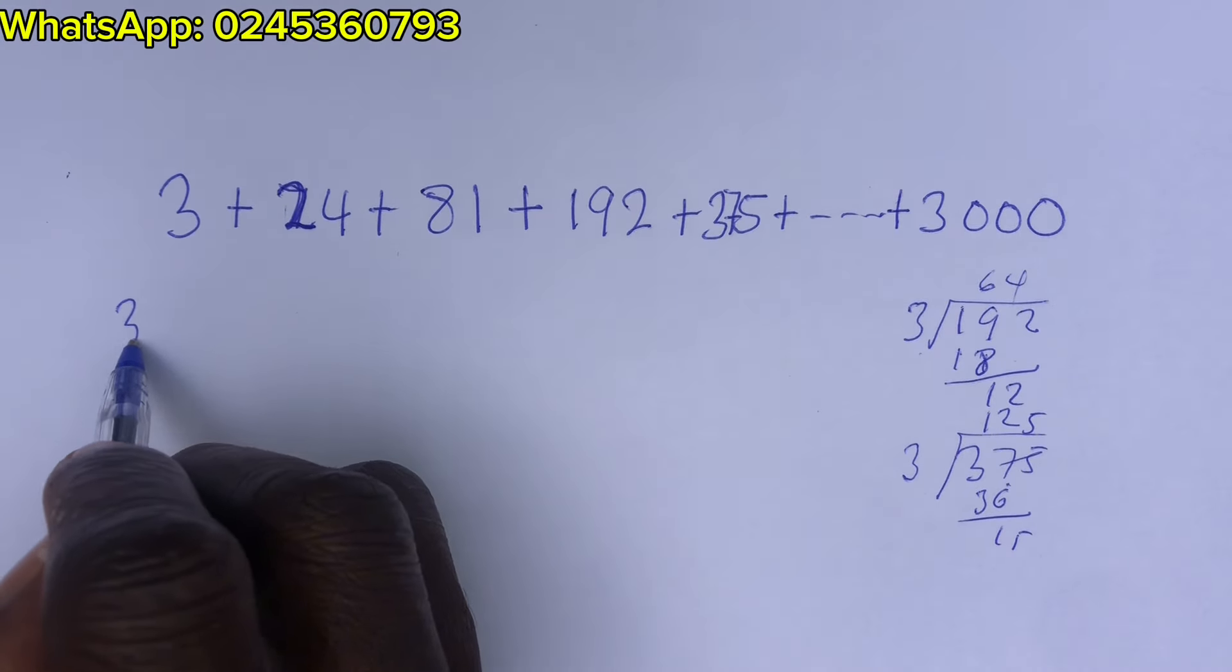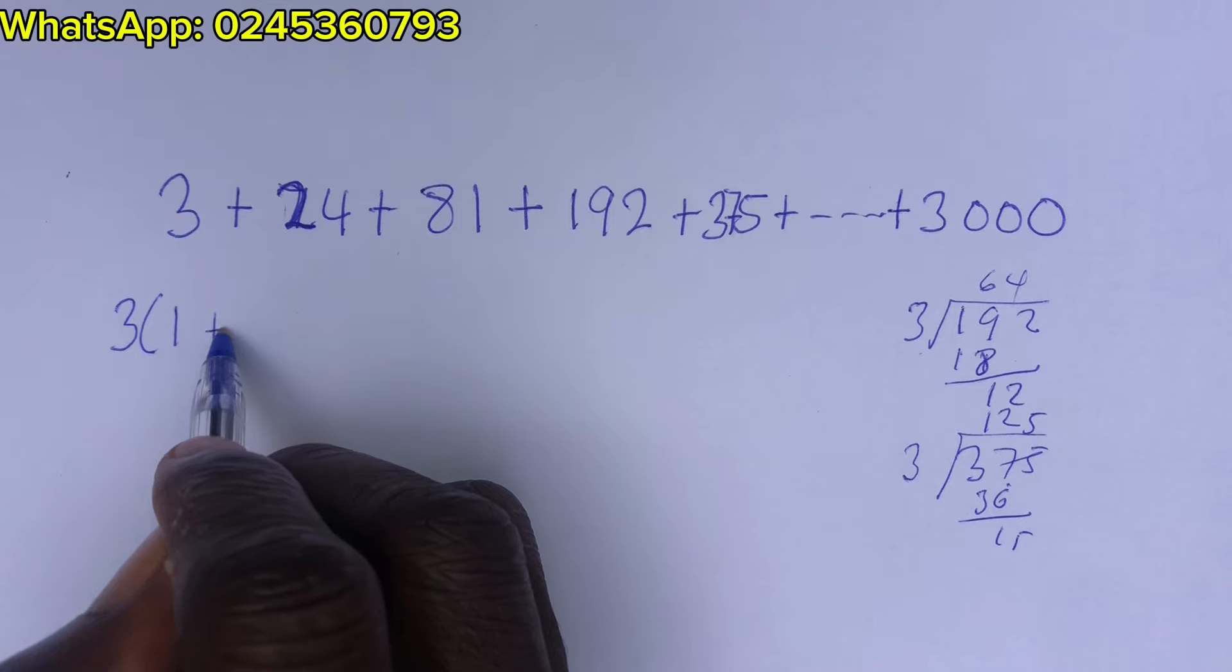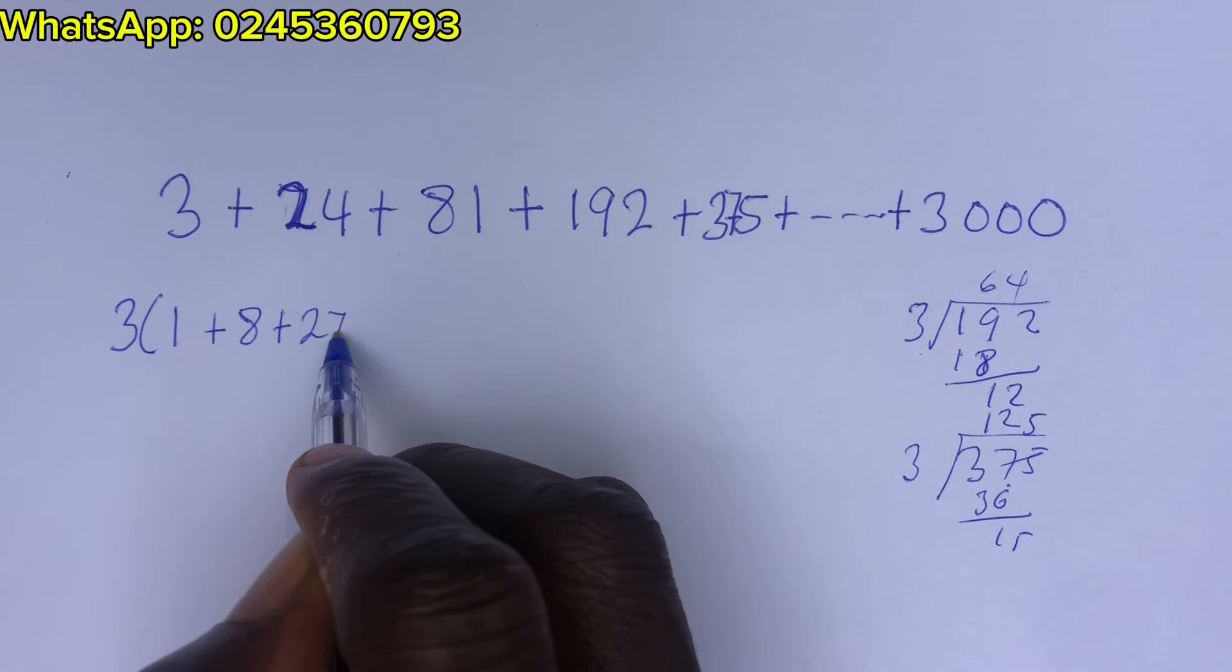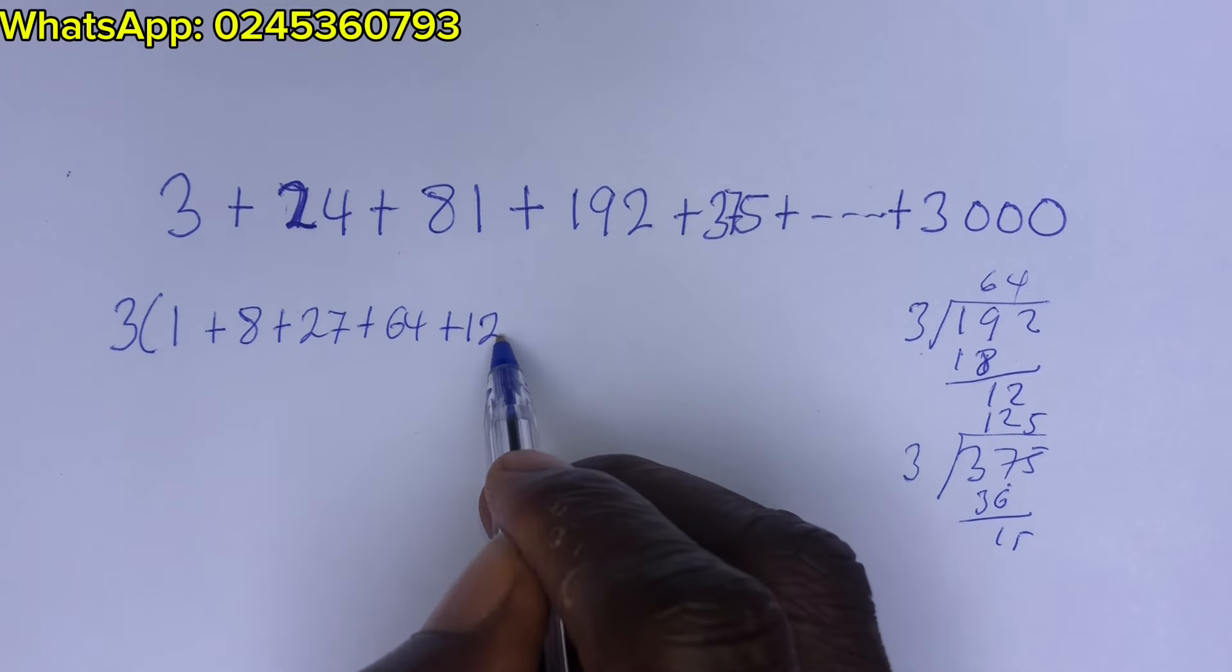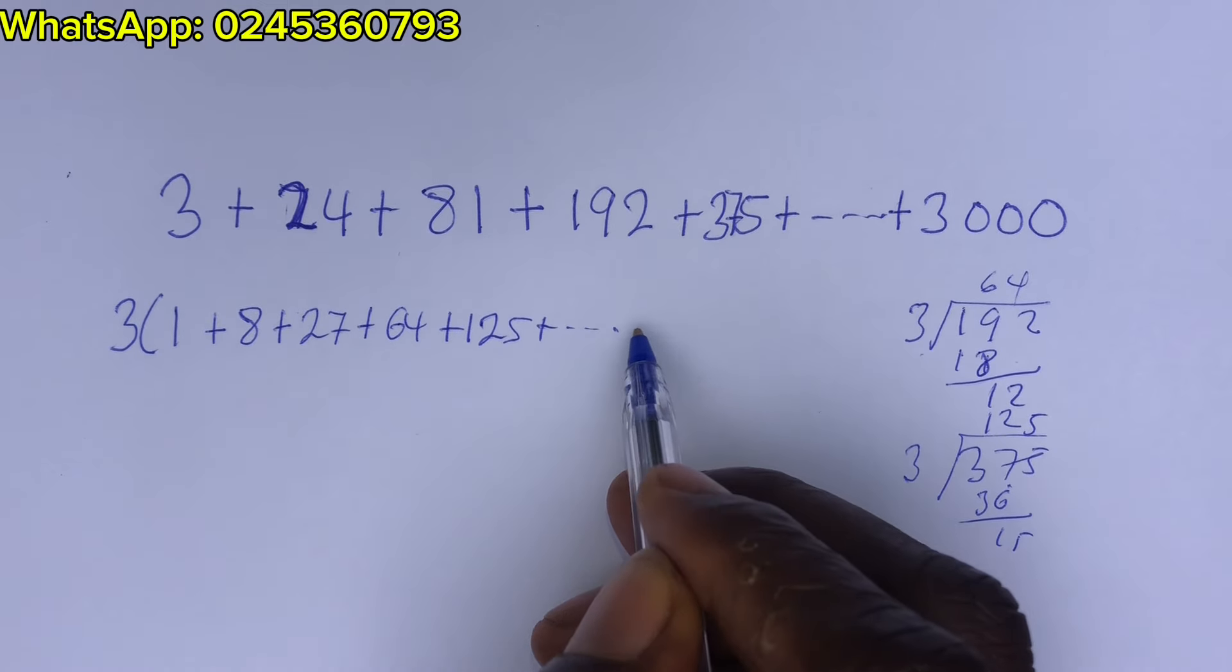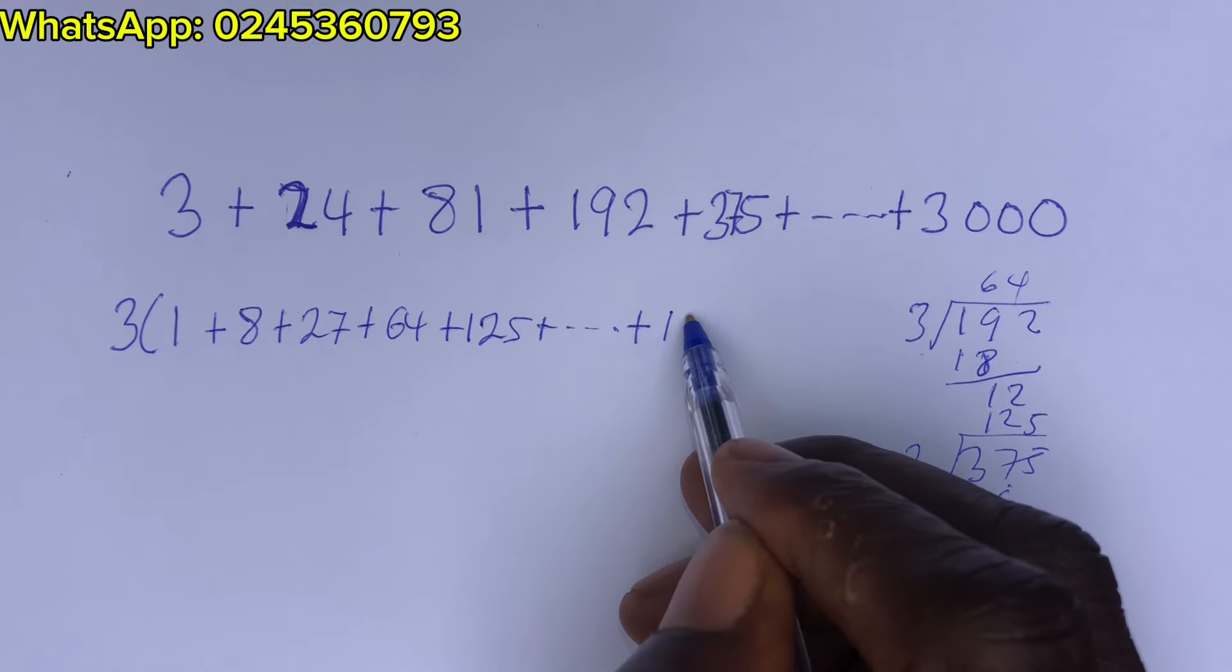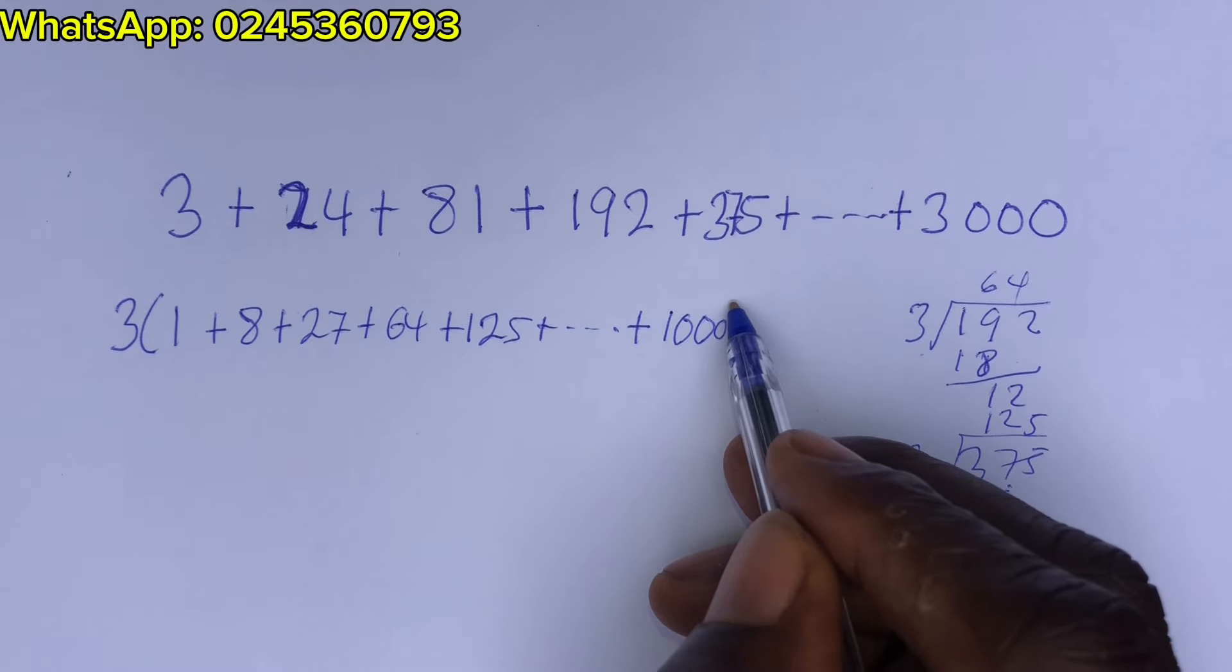So we take 3 out into 1 plus 8 plus 27 plus 64 plus 125 plus up to plus 1,000. Wow.